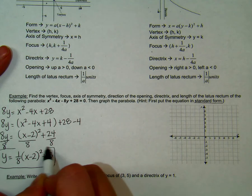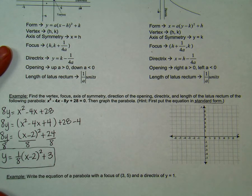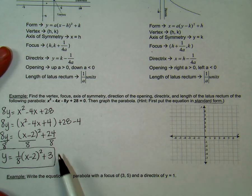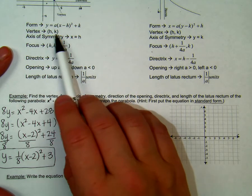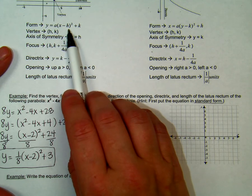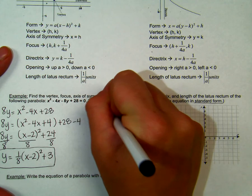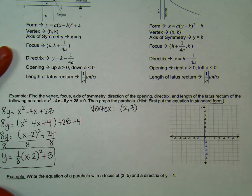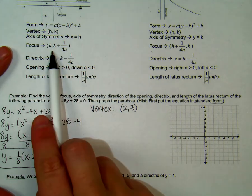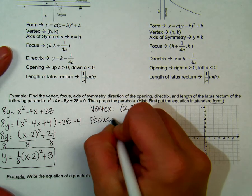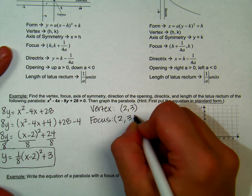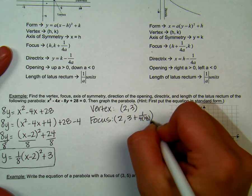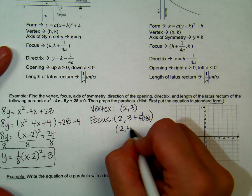This is our equation in standard form. Once we have our equation in standard form, we can find all the different things we were asked to find. Let's start with our vertex. We know that it is a vertical parabola, so our vertex is going to be (h, k), which is going to be (2, 3). Next we need to find our focus using the formula given. Our focus is going to be (2, k plus 1 over 4a), which gives us the focus at (2, 5).